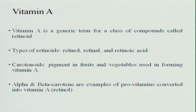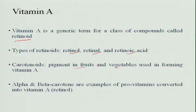Regarding Vitamin A, it is a generic term for the class of compounds called retinoids. There are different types of retinoids — retinol and retinoic acid — which have different functions in the body. Carotenoids are pigments present in fruits and vegetables that form Vitamin A; after entering the body, carotenoids get converted into Vitamin A. Alpha and beta carotene are examples of provitamins converted into Vitamin A.